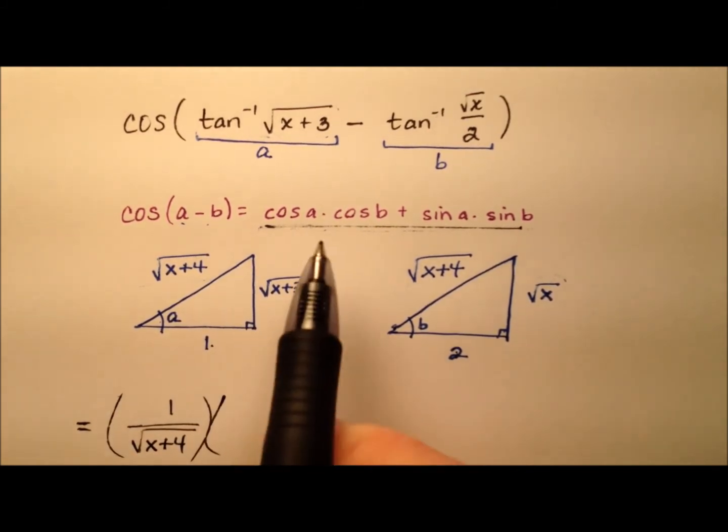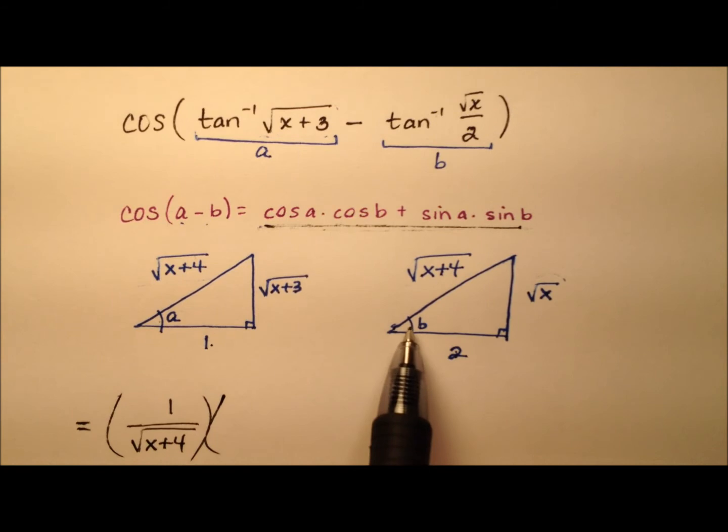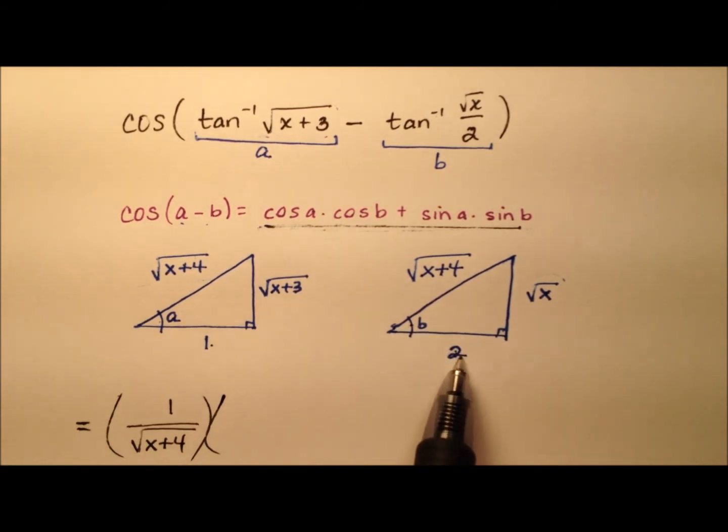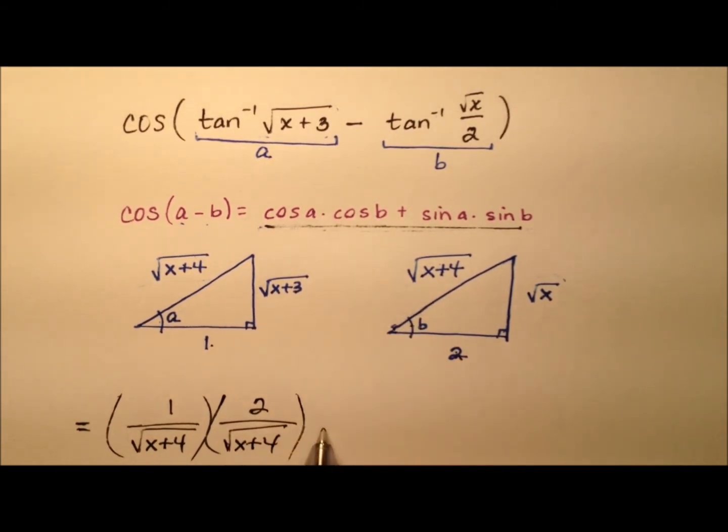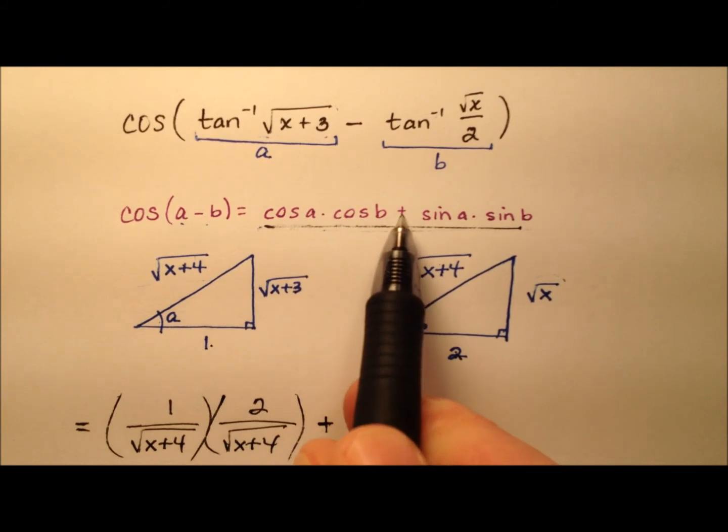And we're going to multiply that by the cosine of B. So here's angle B, and the cosine is adjacent over hypotenuse. So 2 over the square root of x plus 4. And we're going to be adding here based on our formula.